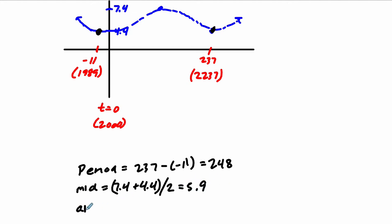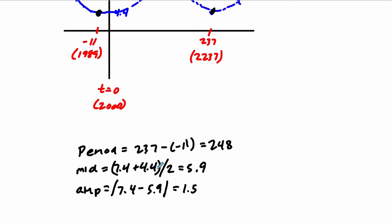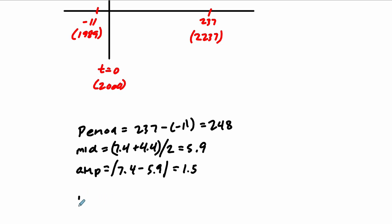And the amplitude is the distance from a max to the midline. So how far apart is 7.4 to 5.9? You could do 7.4 minus 5.9. Take the absolute value, just to be safe, and that's 1.5. So this helps us out. The only thing we need now is a phase shift.